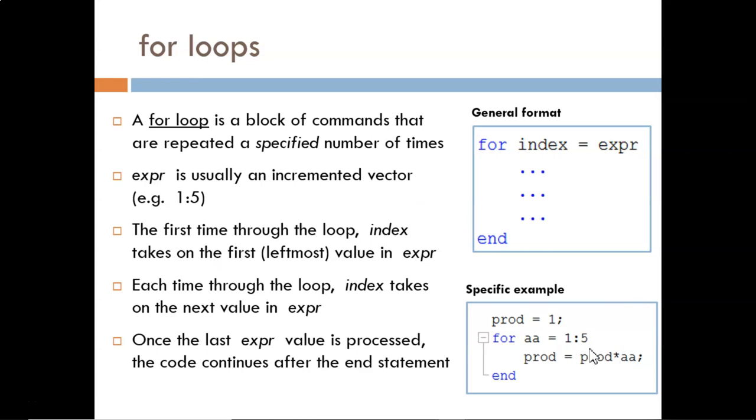In the example below, aa will first take on the value 1, then 2, then 3, then 4, and finally 5. After the commands are processed with aa equal to 5, then we move on to the code that follows the end statement.